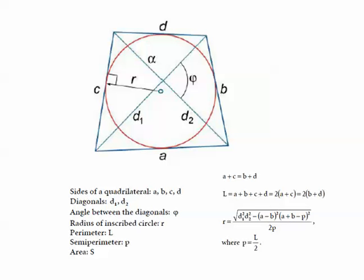This quadrilateral is a tangential quadrilateral. The perimeter is given by L, which is the sum of these sides: a plus b plus d plus c. The semi-perimeter p is given by L by 2. The area is given by S.